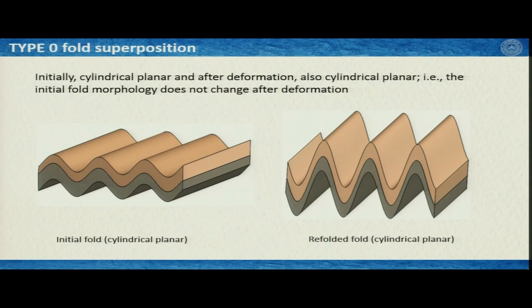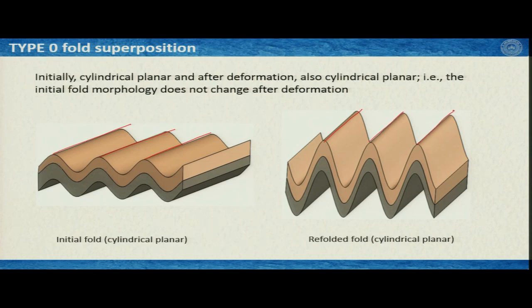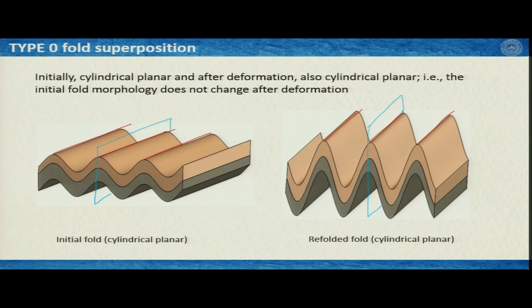Type 0 fold superposition: initially cylindrical and planar, and after deformation it remains cylindrical and planar — the initial fold morphology does not change, it may only get tightened. The fold axis is straight before and after deformation, and the axial plane remains straight. This is plane cylindrical superposition. A short movie demonstrates how the fold simply gets tightened episodically without changing the orientation of the principal stress axes or the direction of layer-parallel compression.